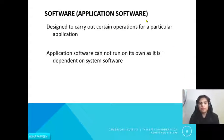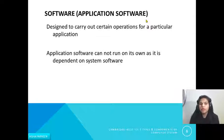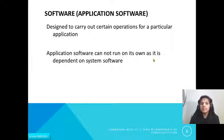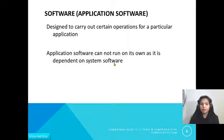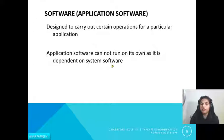Now let's look at software. There are two types: application software and system software. Application software is designed to carry out certain operations for a particular application — if you want to do any particular task, you need application software. Application software cannot run on its own because it is dependent on the system software. For example, whenever you purchase a computer or laptop it has an operating system, which is an example of system software. Without the operating system you cannot run any other application.